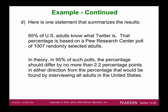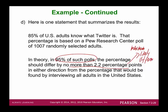A statement summarizing the results: 85% of US adults know what Twitter is. That percentage is based on the Pew Research Center poll of 1,007 randomly selected adults. In theory, in 95% of such polls, the percentage should differ by no more than 2.2 percentage points in either direction — this is the maximum likely difference between the sample proportion and the population proportion that would be found by interviewing all adults in the U.S.